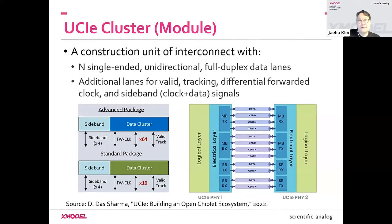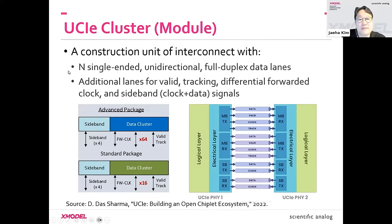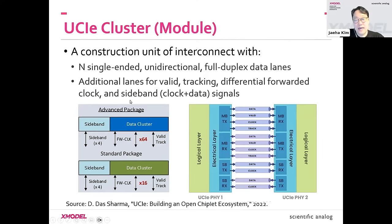The UCIe interface can be constructed in units of a cluster or module, each of which defines the set of signals that two UCIe interfaces use to communicate. If you need higher bandwidth between two chiplets, you simply replicate these clusters multiple times. Each cluster contains a set of single-ended, unidirectional, full-duplex data lanes, plus additional lanes for a valid signal, forwarding differential clocks, tracking signals, and sideband signals for auxiliary communication such as training.